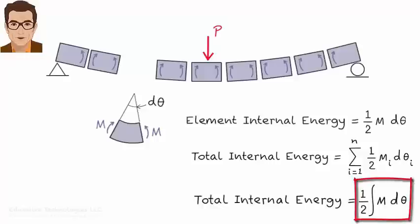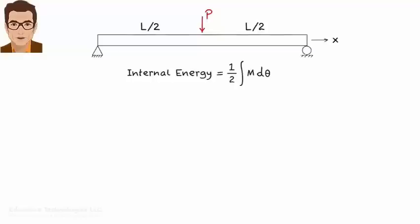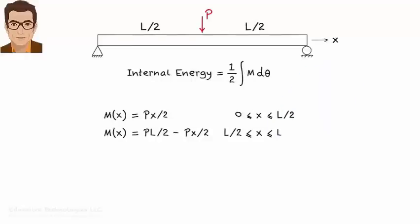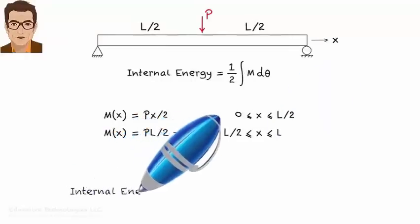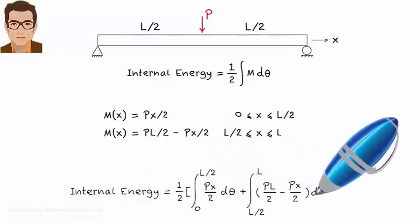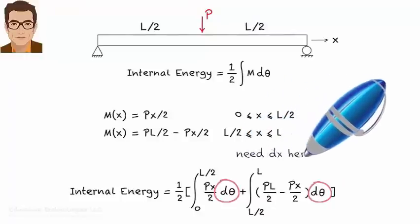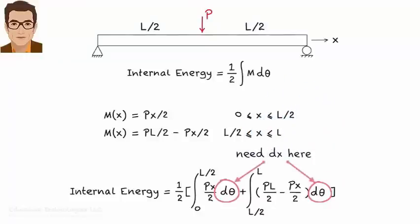Let's see how we can evaluate this expression. I know how to write m in terms of x, since m is the moment equation for the beam. Here is the moment equation for a beam of length L subjected to a concentrated load P at mid-span. So I can write the beam's internal energy accordingly. Since m is defined in terms of x, before I can integrate this expression, dθ must be replaced with dx.